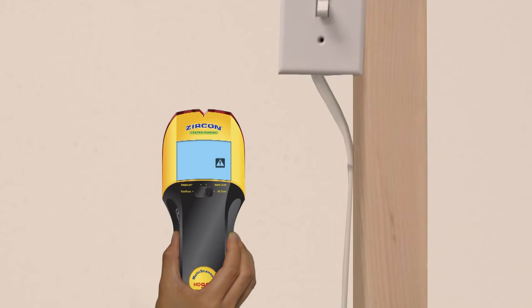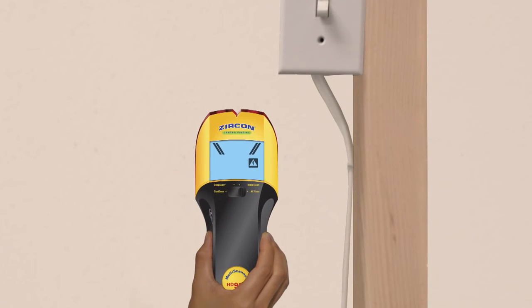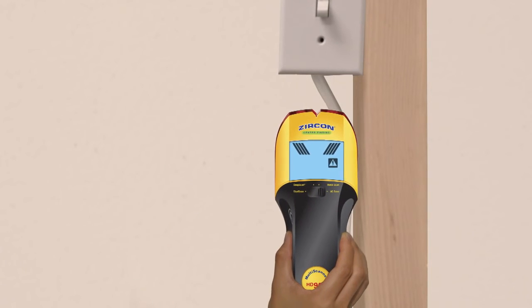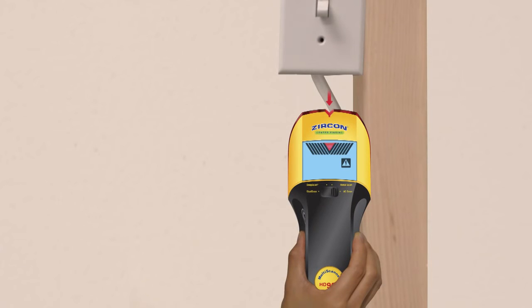To find AC, select AC scan. The target indication bars ramp as you near AC, and the spotlight pointer shines when you're over the target.